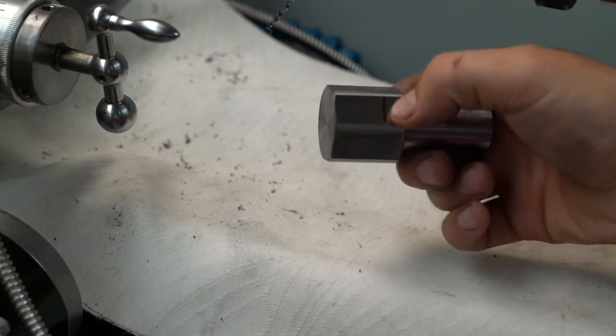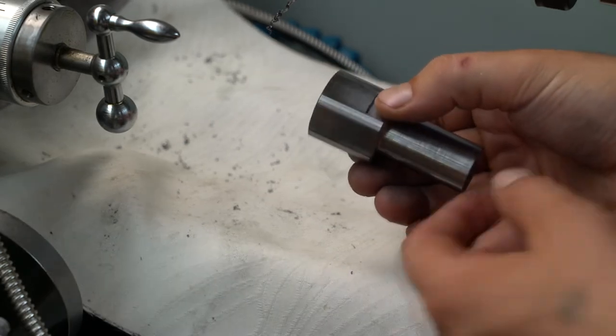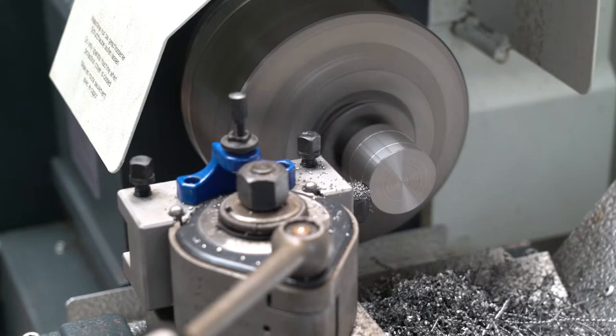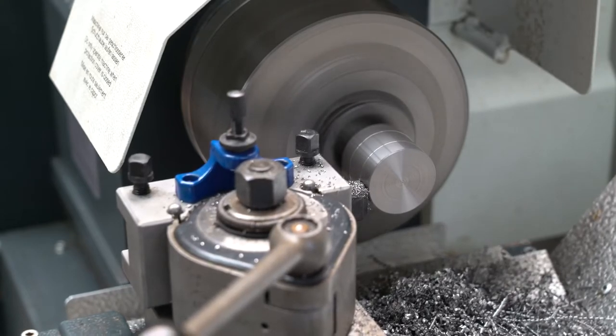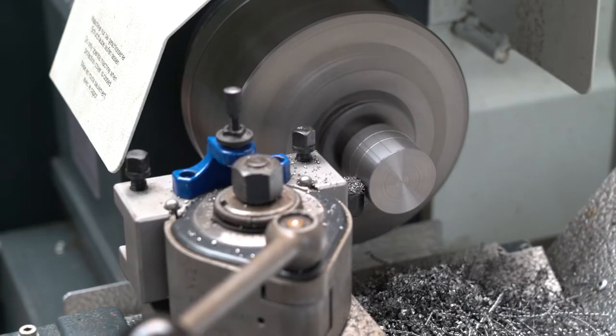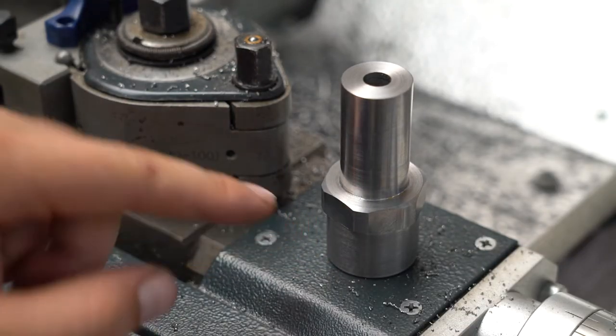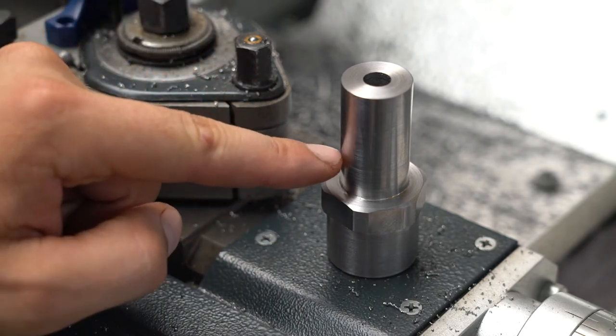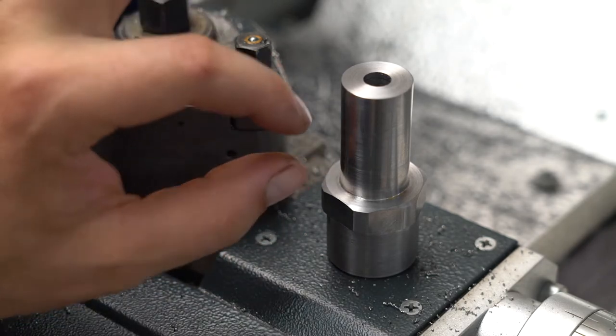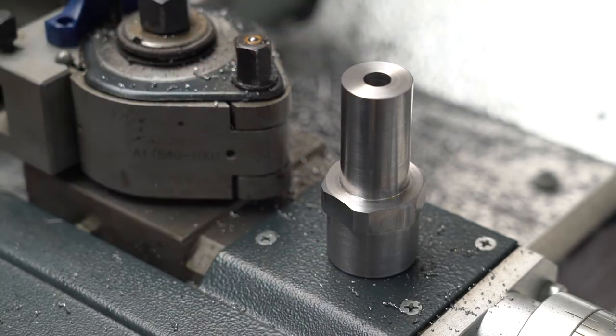So I've turned down part of the hex side. I just need to part off about here so that the chuck plate can sit and I can tighten it down.